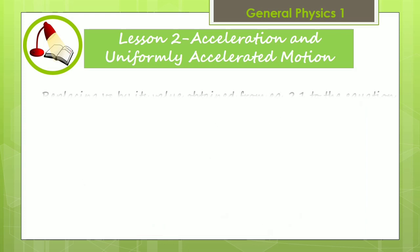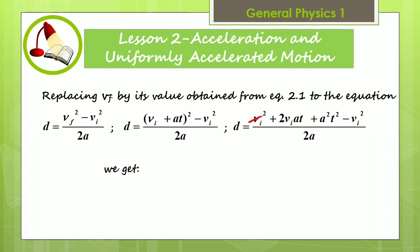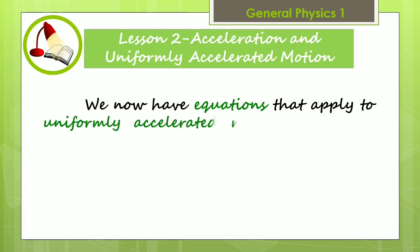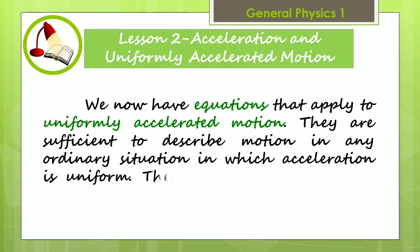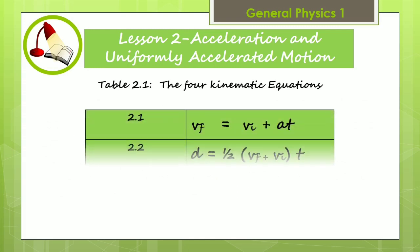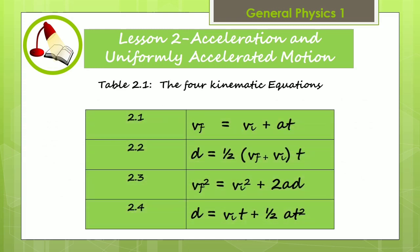Solving for v sub f squared, we get the third kinematic equation. Replacing v sub f by its value obtained from equation 2.1, finally we get the fourth kinematic equation. We now have equations that apply to uniformly accelerated motion. They are sufficient to describe motion in any ordinary situation in which acceleration is uniform. They are likewise known as the four kinematic equations.